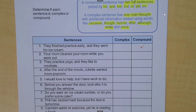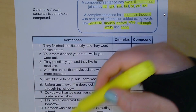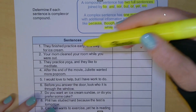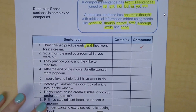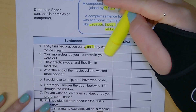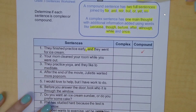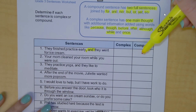When you do your assignment, think to yourself: what is my clue word? That's what I'm going to be highlighting. Number one: 'They finished practice early, and they went for ice cream.' These are two independent clauses connected with a comma and a coordinating conjunction. 'And' is a FANBOY, so this is a compound sentence.